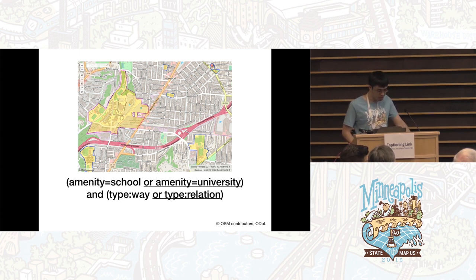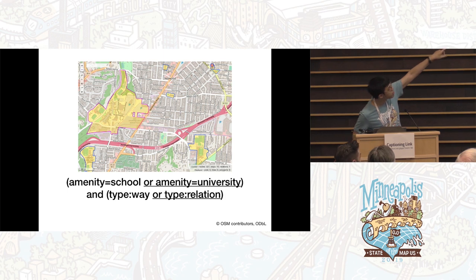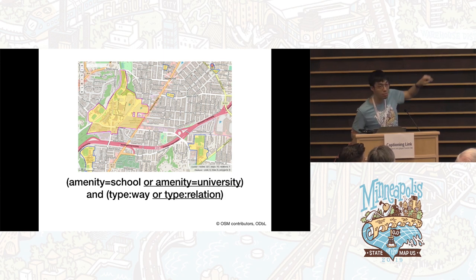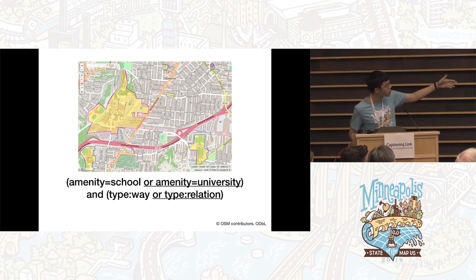This query expands the results to include university campuses, even if they're mapped as multi-polygon relations. You can see that large campus there is a university and it has a hole in it, so it was mapped as a relation. It would not have been caught if I had just said 'and type:way'.